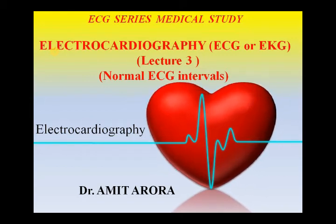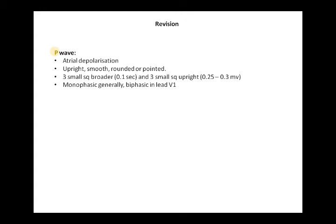Let us have a revision of lecture 2. In lecture 2 we learnt about the normal ECG waves. The first wave in ECG is the P wave, which is caused by atrial depolarization. It is smooth, rounded or pointed, and always upright — 3 small squares broad and 3 small squares tall. It is always monophasic except in leads V1 and V2 where it may be biphasic.